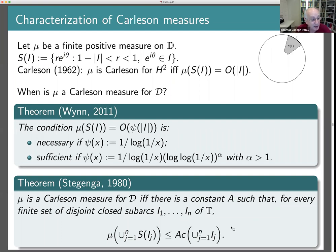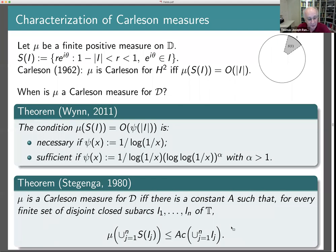Rather than spending more time on Carleson measure characterizations, I want to go back to multipliers and indicate another approach — one that has been more fruitful recently and doesn't depend on trying to characterize multipliers explicitly. To do this, I need to explain the connection between multipliers and reproducing kernels.